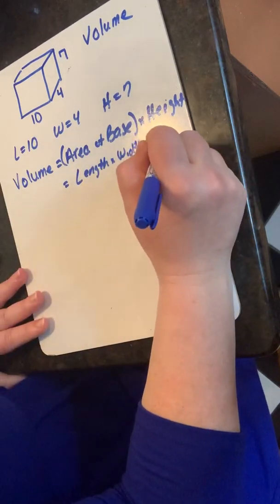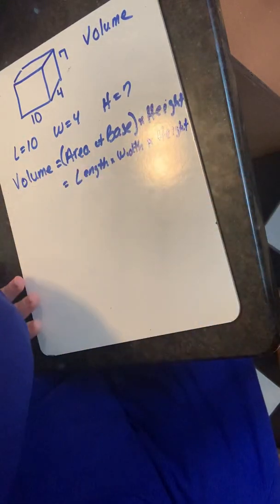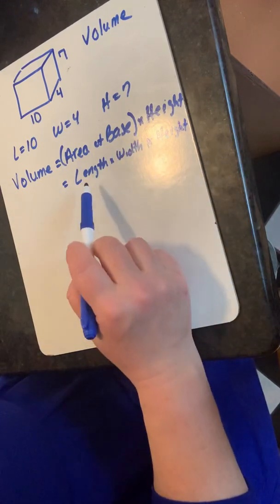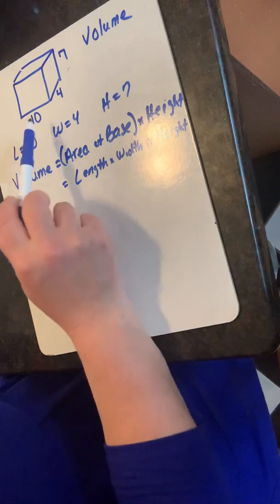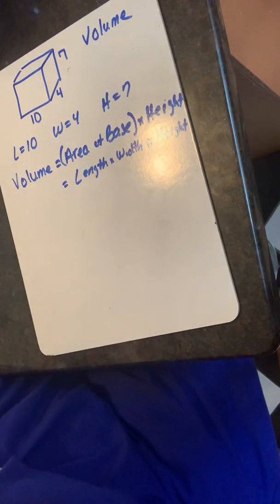So I plug that into my formula and the volume equation is length times width times height for a rectangular prism. Lo conecto a mi fórmula y la ecuación de volumen es longitud por ancho por altura para un prisma rectangular.